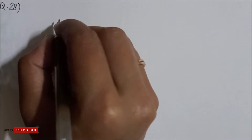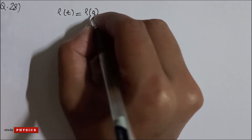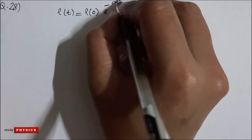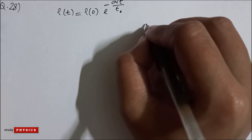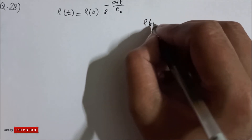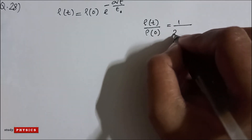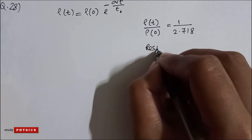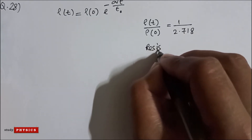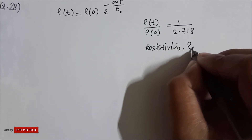We know that ρ(t) = ρ₀ · e to the power minus σt divided by ε₀. They have given that ρ(t) divided by ρ₀ is 1 divided by 2.718, and resistivity ρᵣ is 10 to the power minus 2 ohm meter.